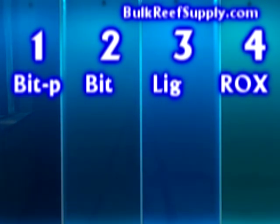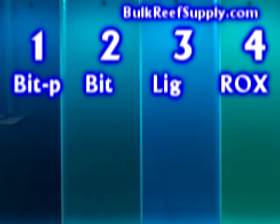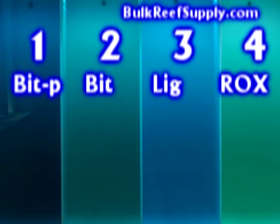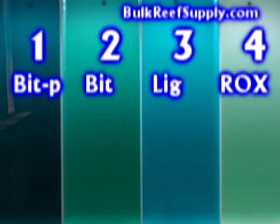You'll notice that the large bituminous pellets perform very poorly. The bituminous granules perform really well at removing the medium-sized blue molecules, but the green color suggests that much of the yellow larger molecules are still there. It looks as though the lignite carbon has removed most of the larger yellow molecules, but is now working on the medium-sized blue molecules. At the end of the hour, the ROX has now basically removed all of the medium and large molecules.